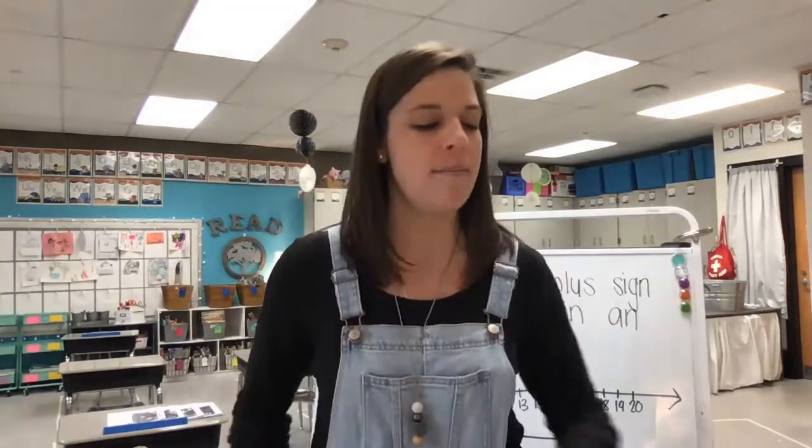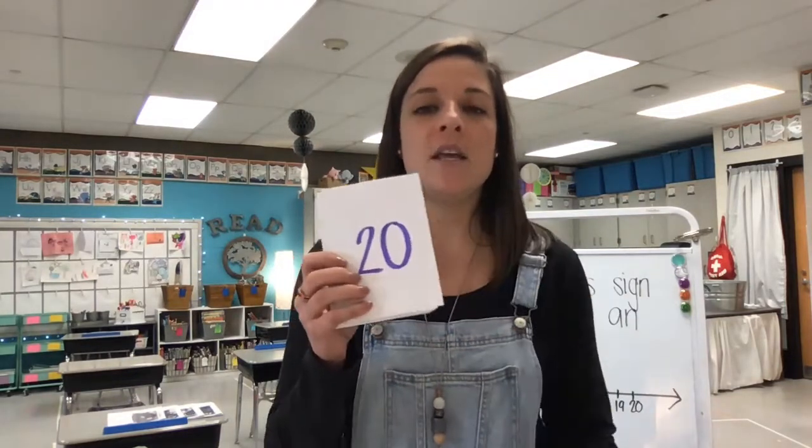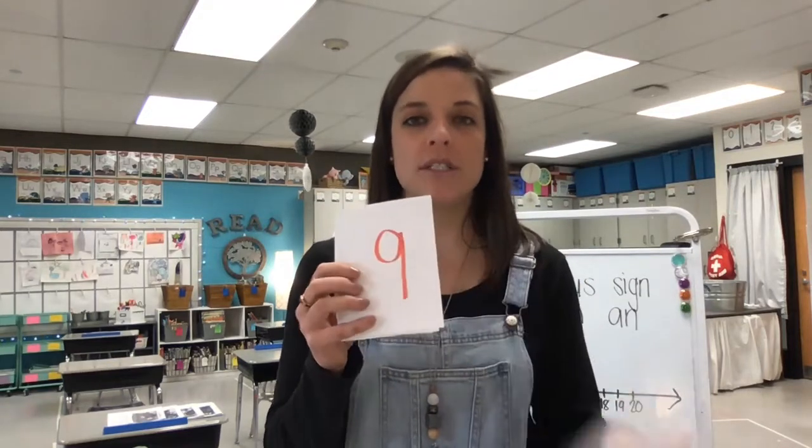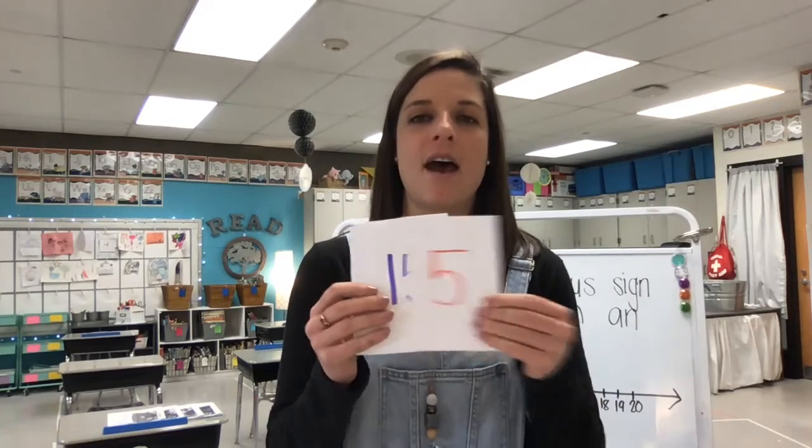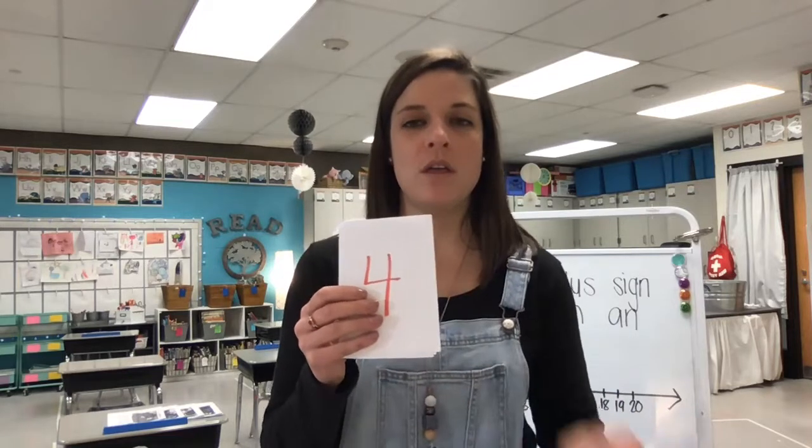All right friends, welcome back. Before we take a look at our learning target we're going to go over some of the skills that we've already learned to keep training our brains, so that as soon as we think about number order our brains can just automatically do it. Let's go over our numbers — we're just going to say their names. Here we go: 3, 16, 20, 19, 13, 9, 8, 17, 18, 7, 6, 5, 15, 2, 4, 11, 12, 14, 10, 1. Good job.